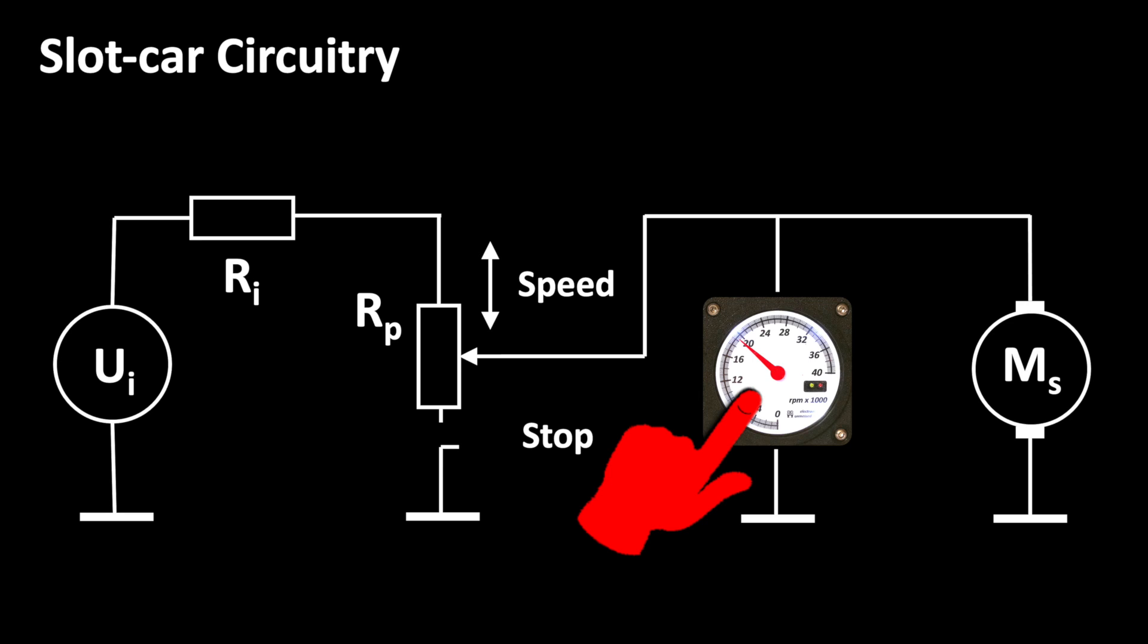Since we are measuring the voltage across the motor, the voltage practically rises and falls with the speed of the motor. And RPM is proportional to the speed, at least as long as the wheels aren't spinning.